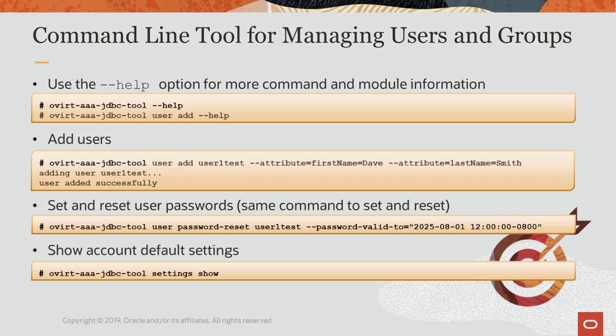By default, the following password policy applies to user accounts on the internal domain. Passwords must be a minimum of six characters, and three previous passwords used cannot be used again when changing the password. Using the command ovirt-aaa-jdbc-tool settings show will inform about the various password policy settings and default settings.